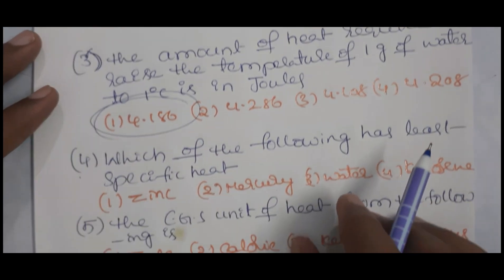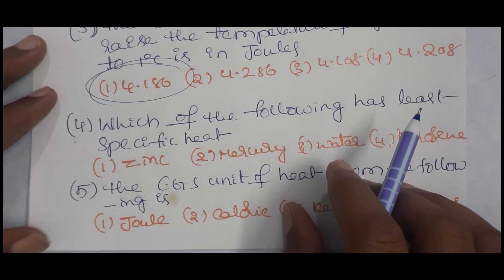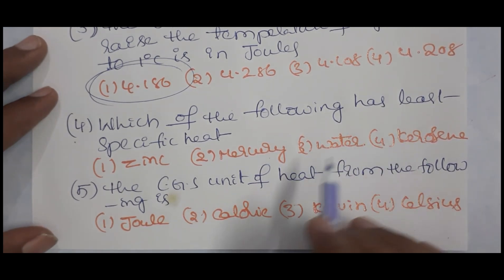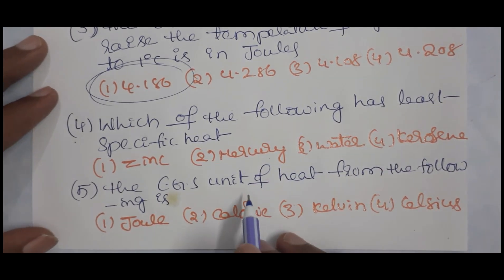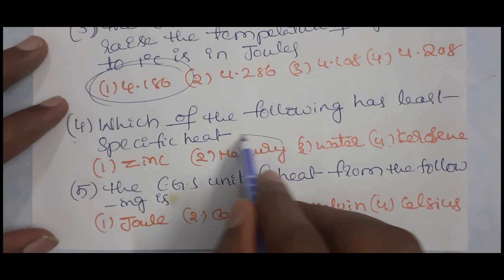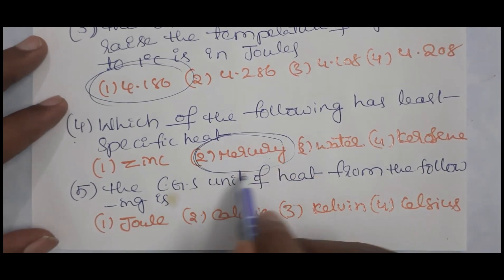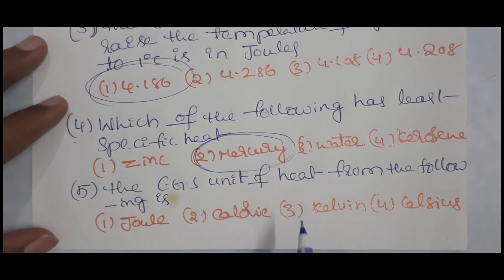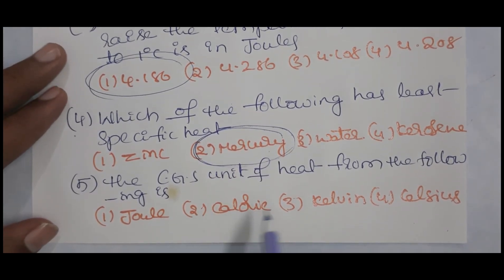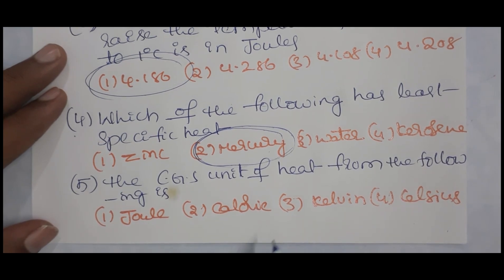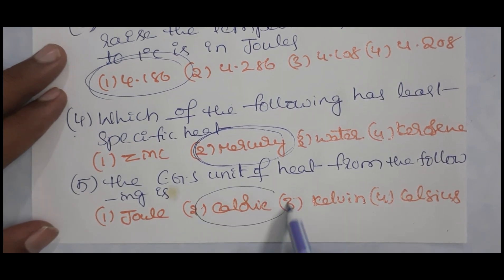Mercury has the least specific heat. The CGS unit of heat is calorie and the SI unit of heat is joules. 1 calorie is equal to 4.186 joules or 4.2 joules.